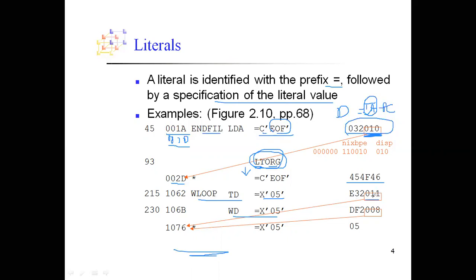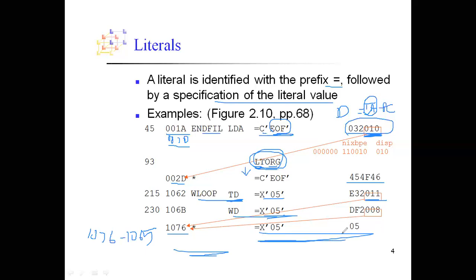For the TD instruction, the displacement 011 is also computed as target address minus PC. The target address is 1076, and the length of the instruction is 3, so PC = 1062 + 3 = 1065. Subtracting 1065 from 1076 gives 011. Similarly for WT, even if you define a literal its value must be mentioned after LTORG or at the bottom of the assembly code. X'05' is also a literal whose value is specified at the bottom.